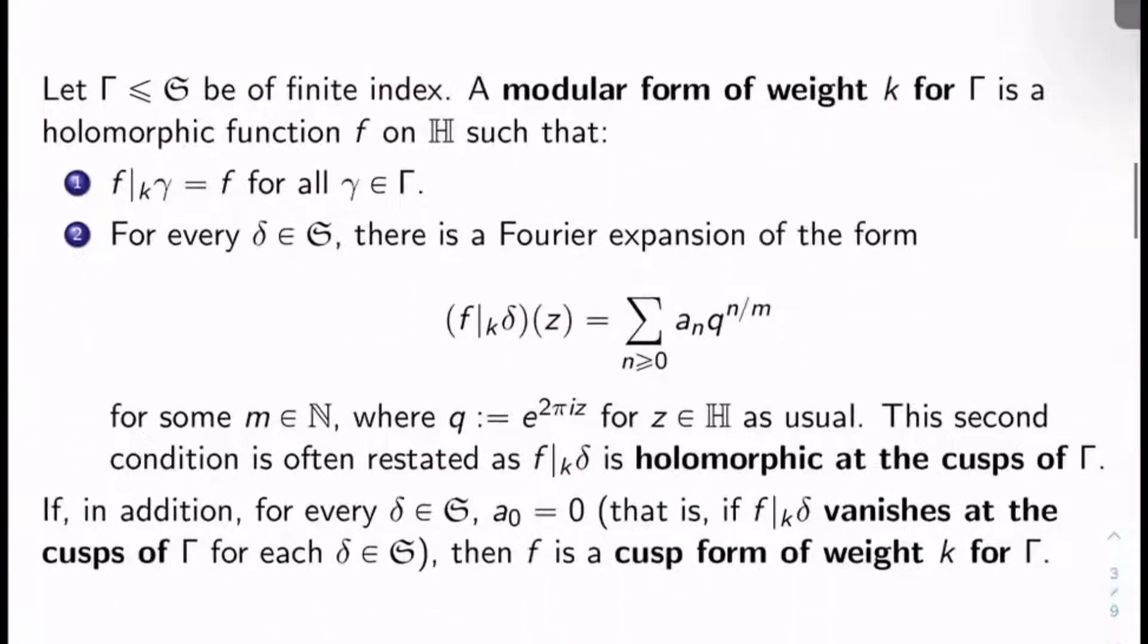So what's a modular form? Let's let Γ in SL_2(Z) be a finite index subgroup. A modular form of weight k for this big Γ is a holomorphic function f on H, such that f is invariant under bar sub k gamma for all gamma in big Γ, and for every delta in SL_2(Z), there better be a Fourier expansion for f bar sub k delta of z of the form sum over n greater than or equal to 0, a_n q^(n/m) for some natural number m. Notice I need my Fourier expansion to start at index 0. I don't want any negative index terms if I want to be a modular form.